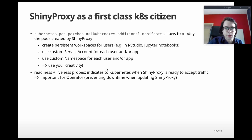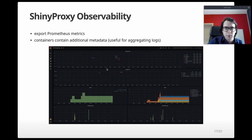We also introduced readiness and liveness probes — a mechanism to indicate to Kubernetes when ShinyProxy is ready to accept traffic, which is important for the operator to prevent downtime when updating. Another thing introduced in recent versions is better observability: we can export Prometheus metrics and added more metadata to the application, like the containers created by ShinyProxy. These features allow you to create nice dashboards, for example in Grafana, plotting startup time, usage time, and the amount of users.